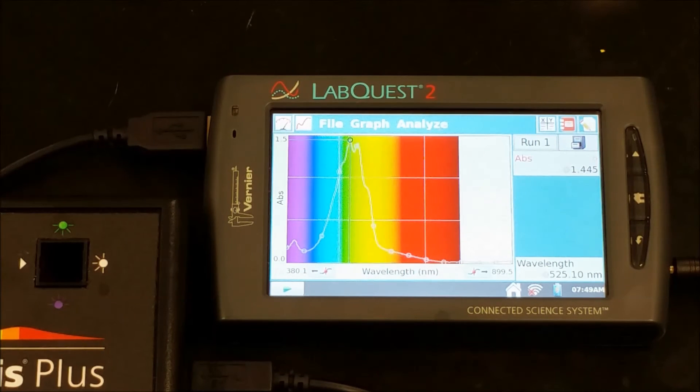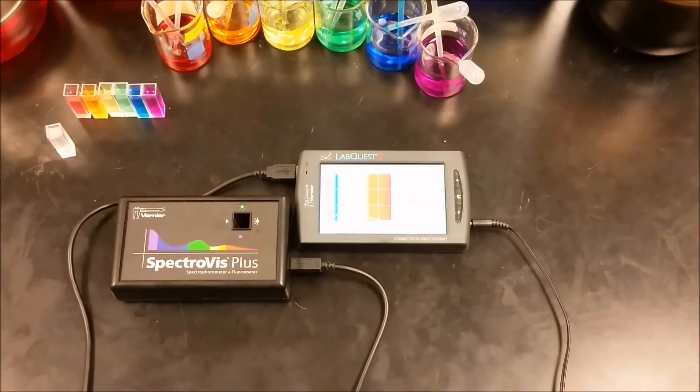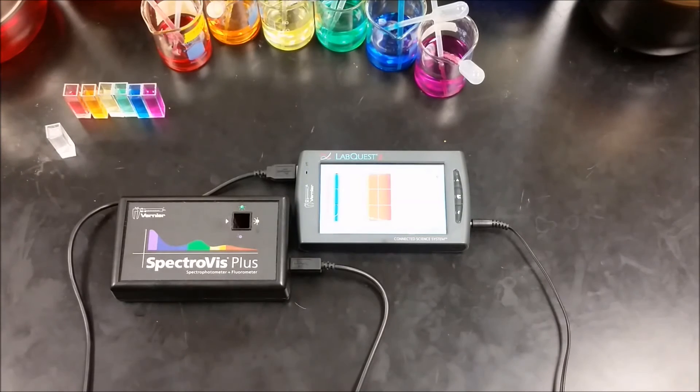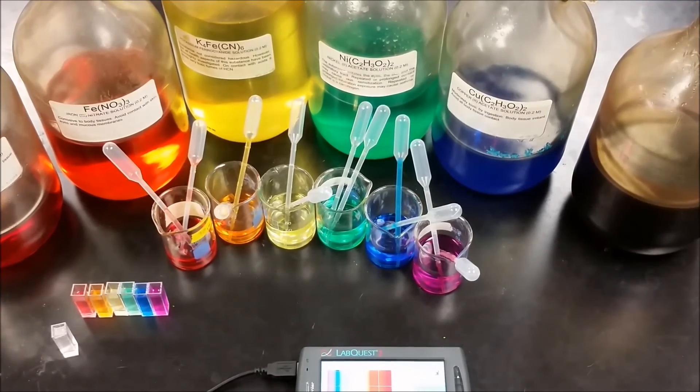Now from that, we can zoom out and start to ask ourselves: what is it that all of these solutions have in common that allows them to absorb light the way that they do? We can also look at the color scheme. When a solution is yellow, what's being absorbed and what's being transmitted?